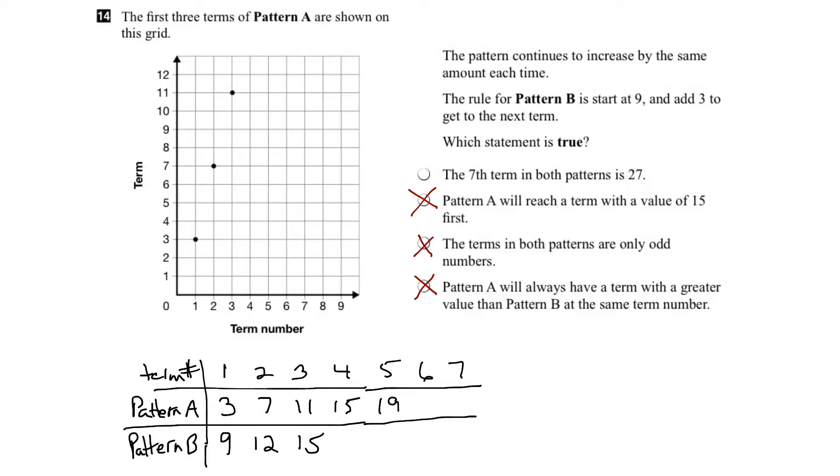After that, 19, adding 4 each time, then 23, and then 27.